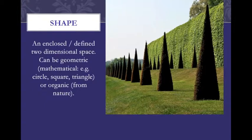Shape is an enclosed, defined two-dimensional space. It can be geometric and mathematical — for example circles, squares, or triangles — or organic, as found in nature.